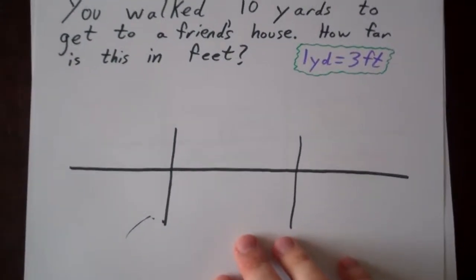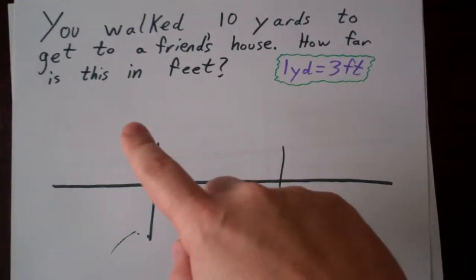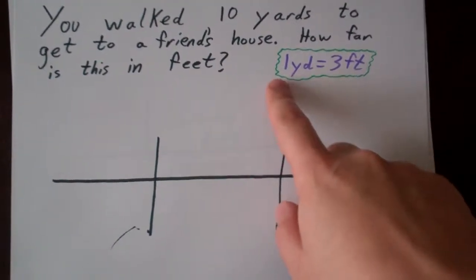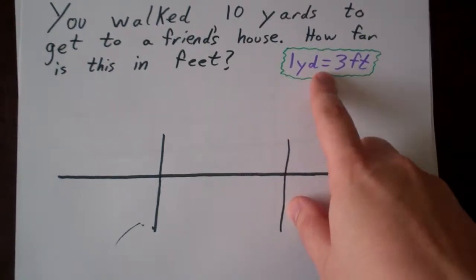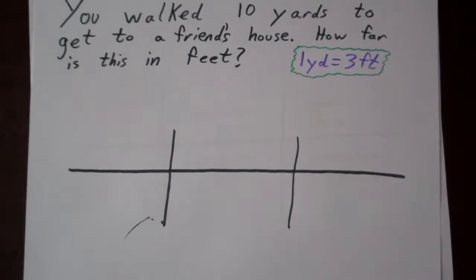We'll start with this example. You walked 10 yards to get to a friend's house. How far is this in feet? We're going to use the conversion rate 1 yard equals 3 feet. We're going to fill out our chart here. Let's see how we would fill that out.